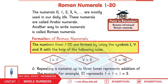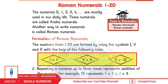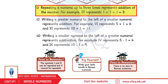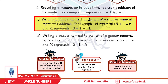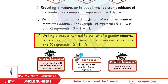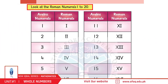I = 1, V = 5, X = 10. Rule 1: Kisi bhi numeral ko teen dafaa likhne ka matlab hota hai jama karna — jaise I + I + I = 3. Rule 2: Kisi chote number ke left par bada number likhne ka matlab jama hota hai — jaise VI ka matlab hai 5 + 1 = 6. Rule 3: Kisi bhi chote number ke dayen side par bada number likhne ka matlab hota hai subtraction — jaise IV ka matlab hai 5 − 1 = 4.